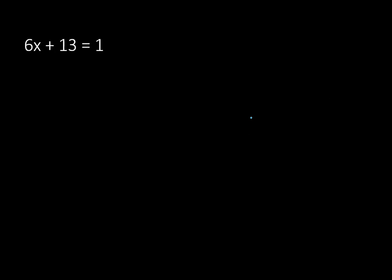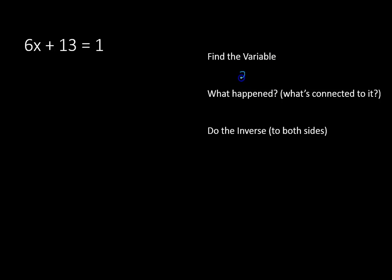Let's do another one, throw in some negatives, and see what happens. You'll notice we follow the same exact steps. Find our variable. Variable is x. In these videos, it usually is. What happens to your variable? What's connected to it? Well, we're multiplying times 6, and we're adding 13.